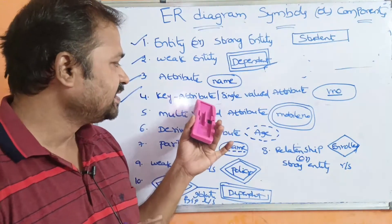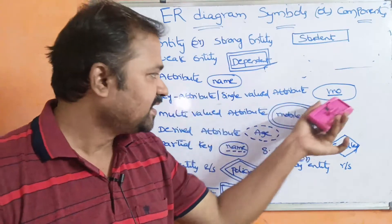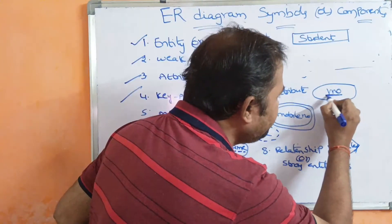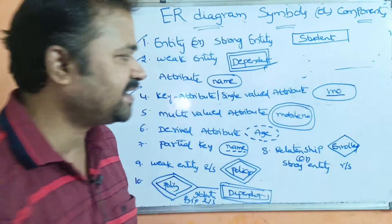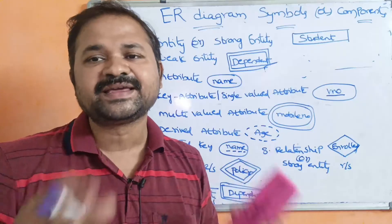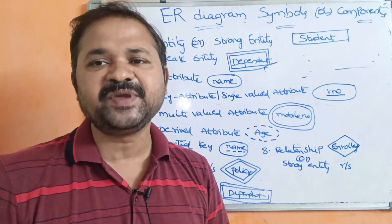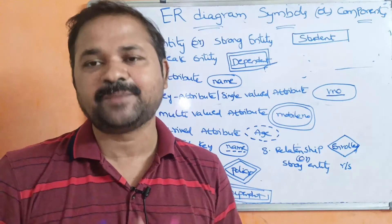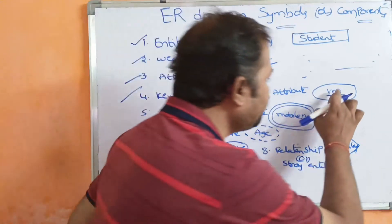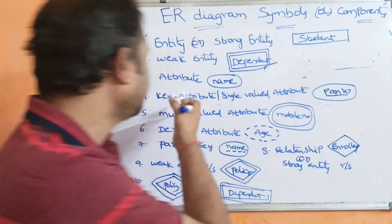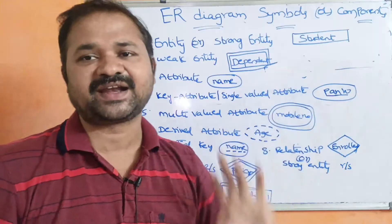Next is the key attribute. Key attribute means if that entity uses a primary key, we use the ellipse symbol with the attribute name underlined. We know that a primary key is unique. So roll number, if underlined, becomes the key attribute. Key attribute is also called a single-valued attribute. Single-valued attribute means an attribute which has only a single value — for example, PAN number. A person can have only one PAN number. So PAN number is underlined within the ellipse.